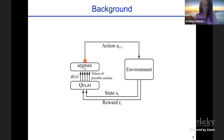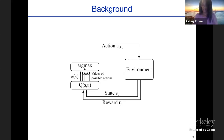Throughout your reinforcement learning career, you've probably seen a diagram like this: an agent takes actions, interacts with its environment, and receives rewards. What it's trying to do is learn a policy that says, in a given state, which action should I take? What you want to learn is which actions will allow you to maximize your long-term future discounted return, often represented through Q values.